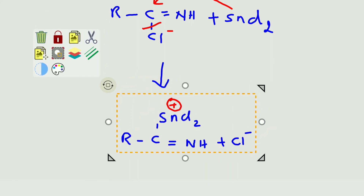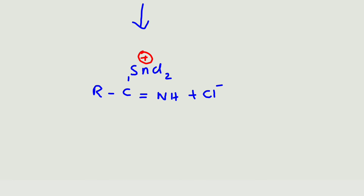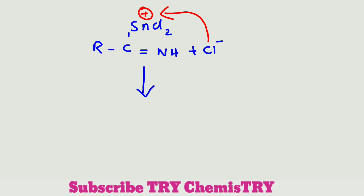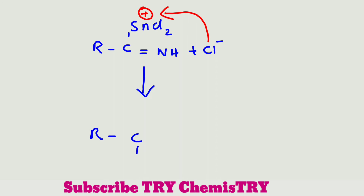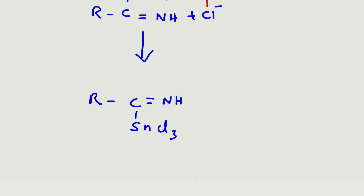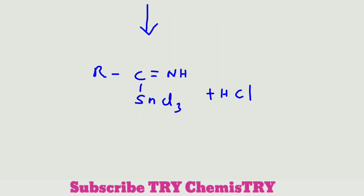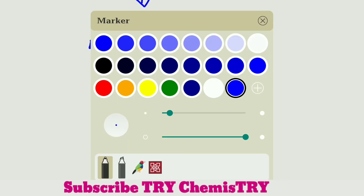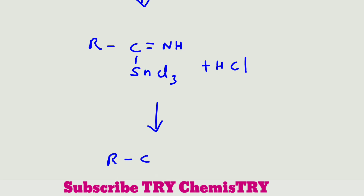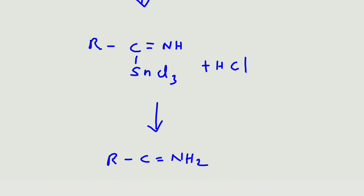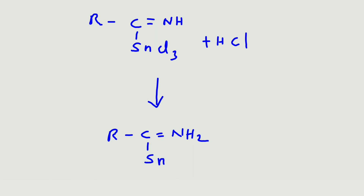The positive charge on tin is neutralized by Cl⁻, giving the salt R–C(SnCl₃)=NH. In the next step, hydrochloric acid reacts again through the same process, giving R–C=NH₂ with SnCl₃ becoming SnCl₄.